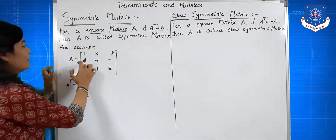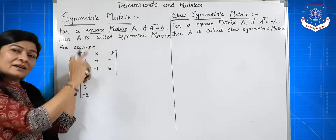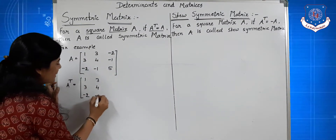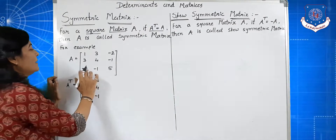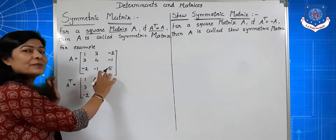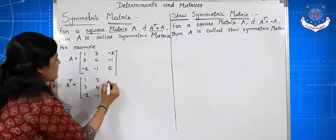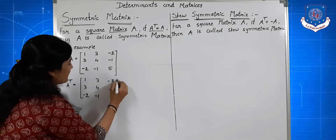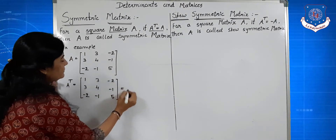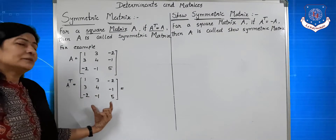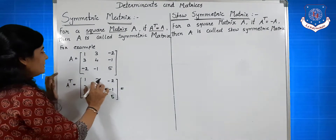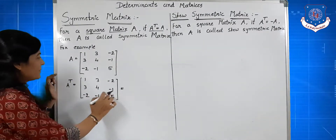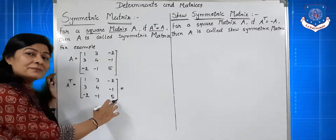The second row becomes the second column: 3, 4, minus 1. And the third row becomes the third column: minus 2, minus 1, 5.